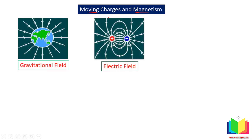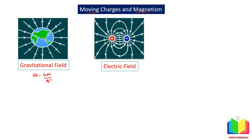You are already familiar with two fields. The first is the gravitational field, equal to Gm over r squared. If you have a body with mass m, it will generate a field. If you have another body with mass m, then this body will attract that mass. So we can say that mass m is the source of the gravitational field.